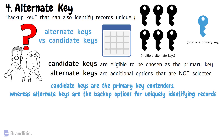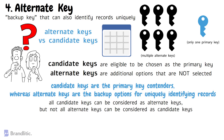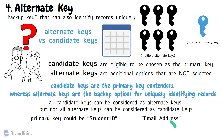From this, we can infer that all candidate keys can be considered as alternate keys, but not all alternate keys can be considered as candidate keys. For example, in a students table, the primary key could be student ID. However, email address can also uniquely identify each student, and therefore email address becomes an alternate key.